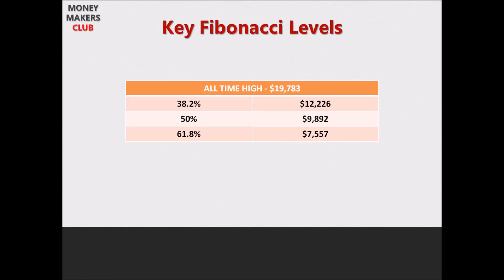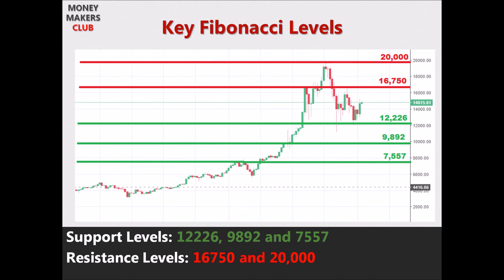To identify the support and resistance levels, we make use of Fibonacci. The recent all-time high of Bitcoin was $19,783. Based on this, we can derive key Fibonacci retracement levels: the 38.2% retracement is $12,226, the 50% retracement is $9,892, and the 61.8% retracement is $7,557. So the support levels are $12,226, $9,892, and $7,557. The resistance levels are $16,750 and $20,000.